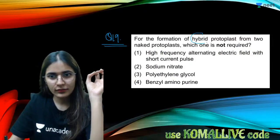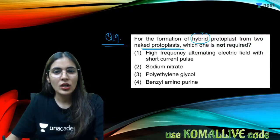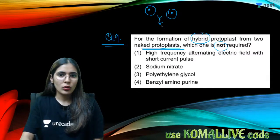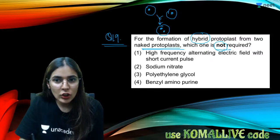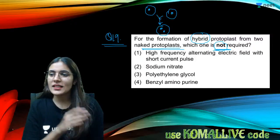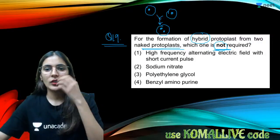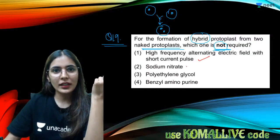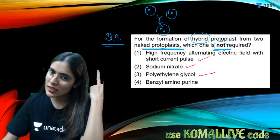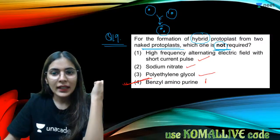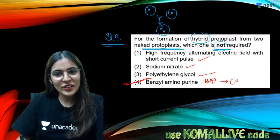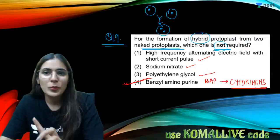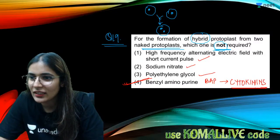Question nineteen: for the formation of hybrid protoplast from two naked protoplasts, which is not required? High frequency alternating current with short pulses and chemicals like sodium nitrate and polyethylene glycol are used for fusion. BAP (benzylaminopurine) is a cytokinin — a plant growth regulator — and does not help in protoplast fusion. So BAP is not required.